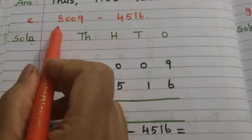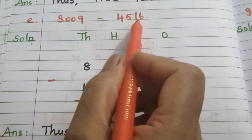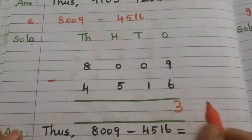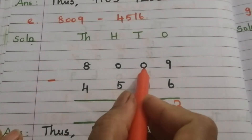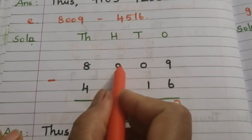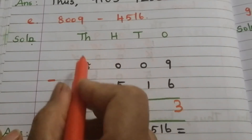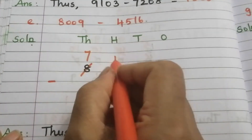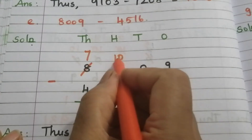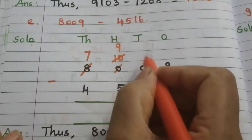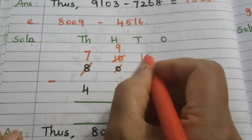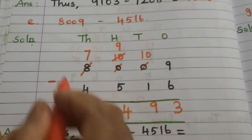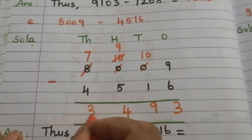Part E: 8009 minus 4516. 9 minus 6 is 3. We can't subtract 1 from 0, so borrow from the next place — here also 0, so we move to the next place. 8 becomes 7 and this 0 becomes 10. Borrow from this 10 — this 0 becomes 10. 10 minus 1 is 9, 9 minus 5 is 4, 7 minus 4 is 3.